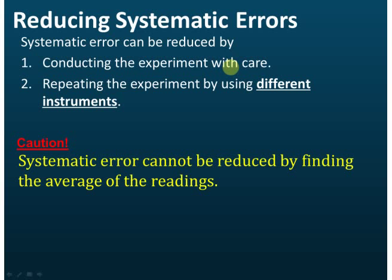Make sure that you use the instruments correctly. Try to identify the zero error — before you make a measurement, check the instrument to see whether it starts exactly at zero or not. If it does not start from zero, after you make your measurement, just subtract the zero error from your readings.